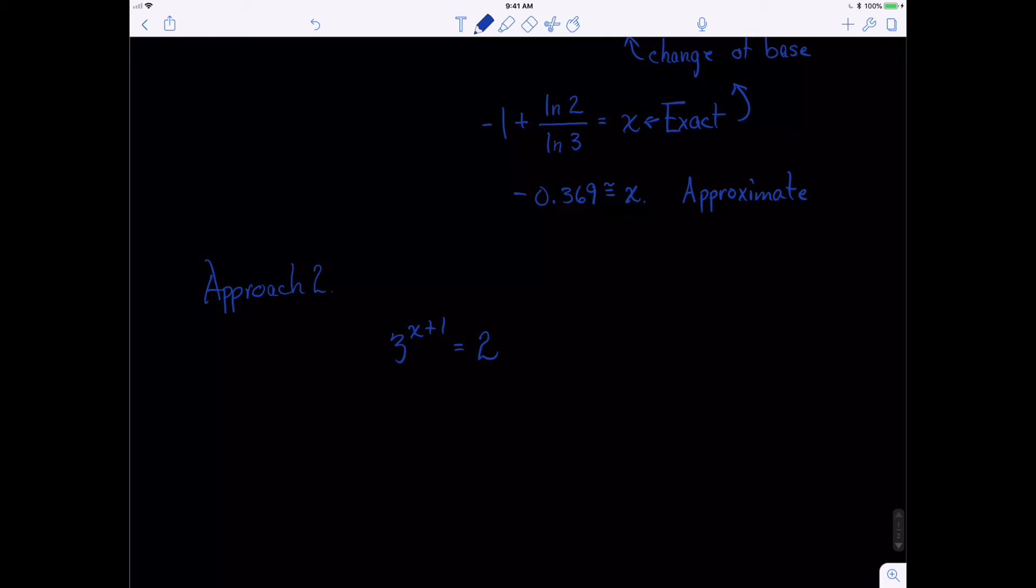Another approach is to just start by taking the log of both sides. And you can take the natural log, or the common log, or the log in base, whatever you want. So let's take the log. So let's take, or let's use the natural log. How about the natural log of 3 to the x plus 1 equals the natural log of 2.